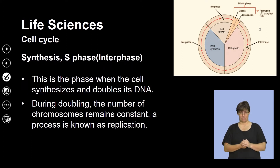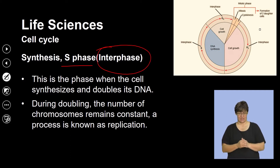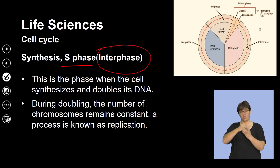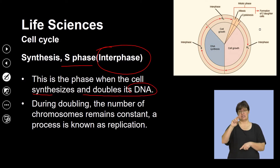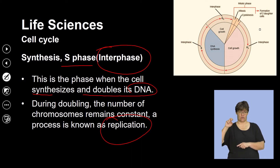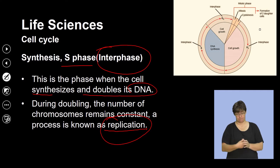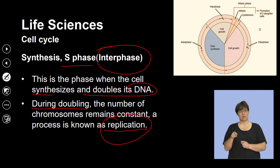When the cell moves into the S phase — the interphase of synthesis — this is the phase when the cell synthesizes and doubles its DNA. We refer to that process as DNA replication. Interphase is identified by the cell's ability to copy DNA through a process called DNA replication, which essentially doubles the amount of genetic information.